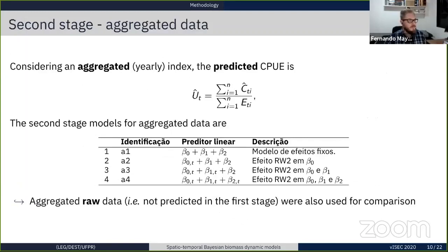The second stage, we first considered using aggregated data, this is just for comparison. We don't intend to do this, but we used the aggregated data for comparison, using the predicted catch from the first stage. In this second stage for aggregated data, we used four different models, varying the level of time random effects in the parameters. We also used the aggregated raw data, also for comparison.